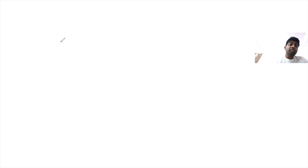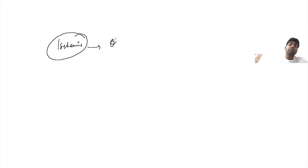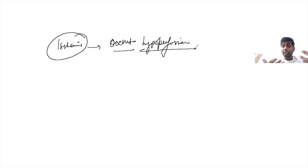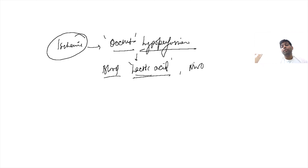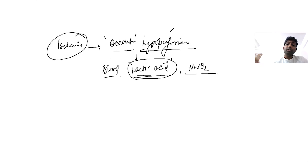An important concept is that when ischemia starts, the patient may not initially have any clinical manifestation. This stage is known as occult hypoperfusion. To detect a patient in this stage, we need a high index of clinical suspicion and can check the blood lactate or lactic acid level, or MVO2. If the blood lactic acid level is elevated, you can identify the patient in the occult hypoperfusion stage.